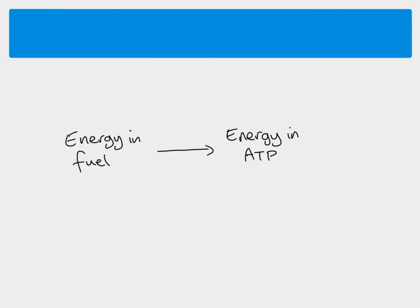With aerobic respiration, the whole point of it is to take energy and fuel. That fuel we usually think of as glucose, but it can be other things as well because we're able to respire fats and proteins. If we just start with saying it's glucose, the glucose is our fuel — we're going to take the energy that's locked up, that chemical potential energy in the glucose bonds, and we want to end up with energy in the bonds of an ATP molecule instead.